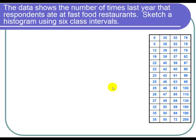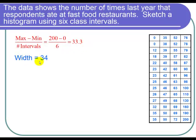So we start out by finding our class interval width. The formula for the class interval width is that it's the maximum minus the minimum divided by the number of class intervals. The maximum was 200, the minimum was 0, and we're using six class intervals. So I calculated 200 minus 0 over 6 and I got 33.3. Now I always round up to find out what my width is, so my width is 34.